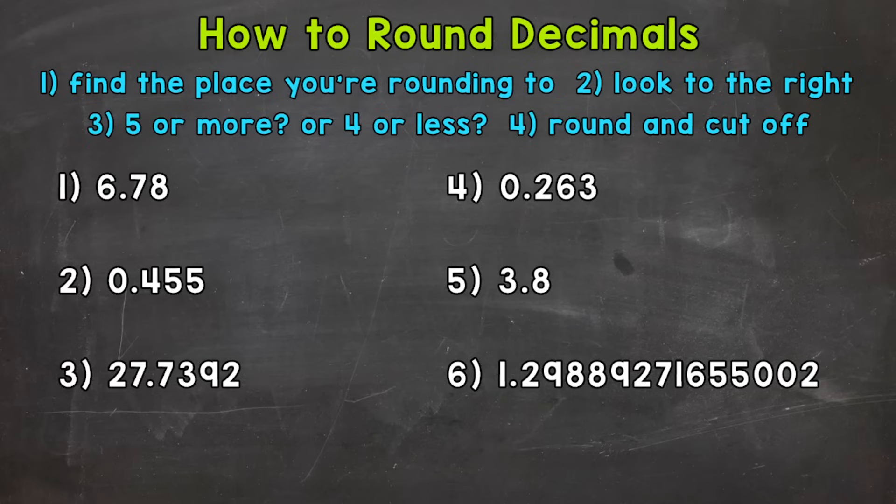So for number one, we have 6 and 78 hundredths. The first thing that we need to do, find the place that we're rounding to. For number one, we're going to round to the tenths place. Let's underline the digit in the tenths place. So that's 7. Once we have that, we look at the place and digit to the right. So to the right of the tenths place, we have the hundredths place. In the hundredths place, we have the digit 8. So let's draw an arrow to show that we are looking to the right.